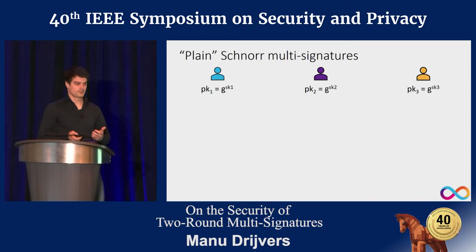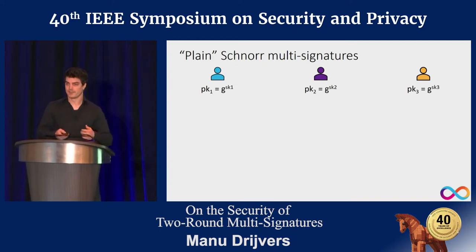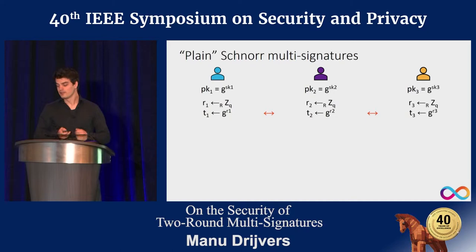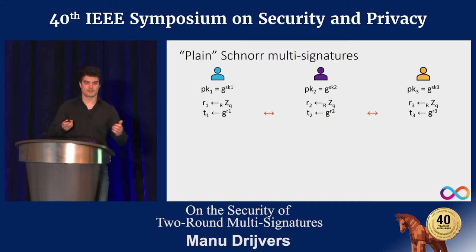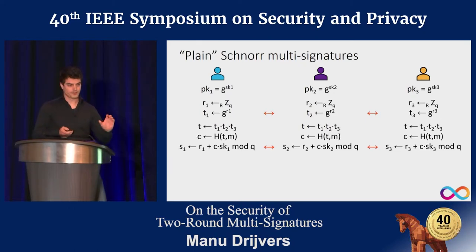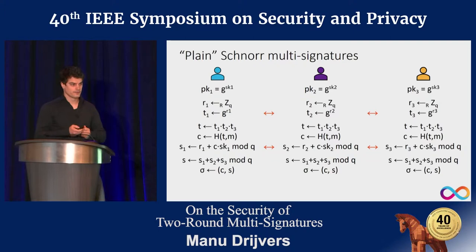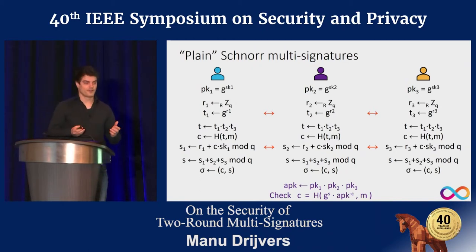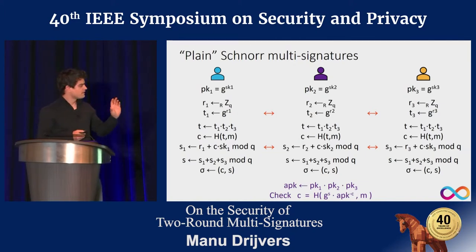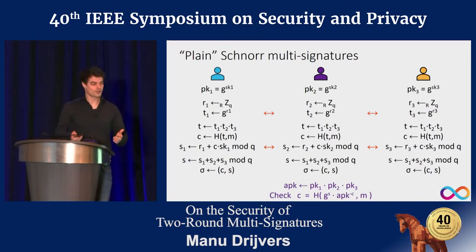Many people have tried creating multi-signature schemes from Schnorr. In the standard approach with three users, they each generate a key pair, compute their t values, interact to share them so everyone can compute the product of all t values, compute c as before, and each compute a partial s value. Because of the structure, these s values can be summed, yielding a signature that is small and verifiable against the product of their public keys — their aggregate public key. The result has exactly the shape of a standard Schnorr signature.